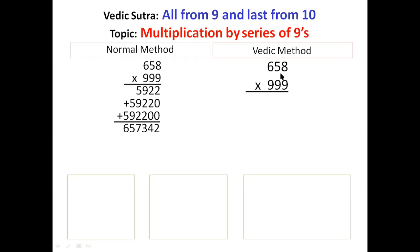First step is 1 less: 658 minus 1 is 657, what is written here in red. And then second step is just use this Sutra: all from 9, last from 10.